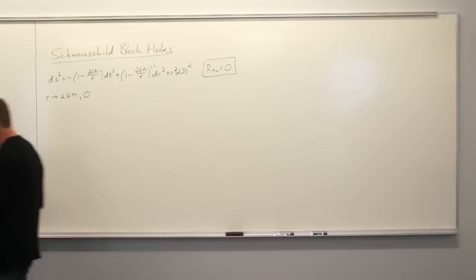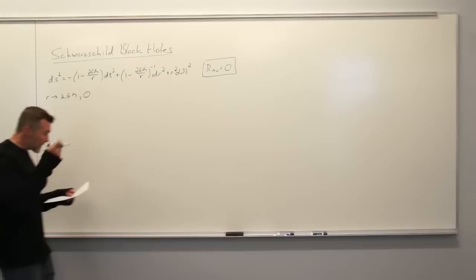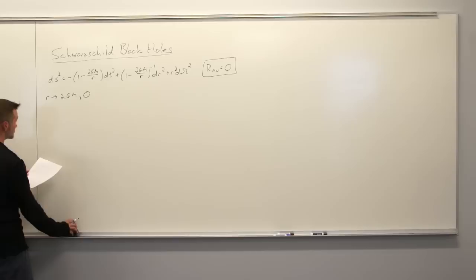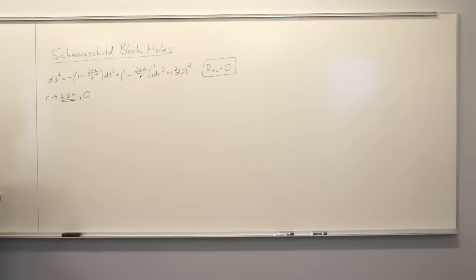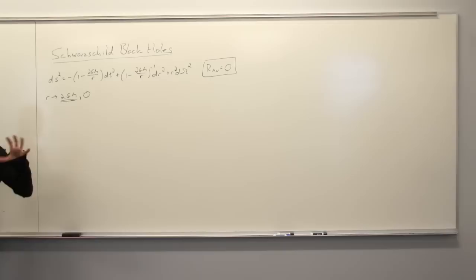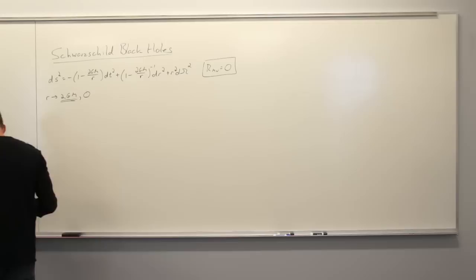We really want to know what a black hole is, so that's what we're going to spend today and next time talking about. r equals zero is a bad place to go — an entire star is sitting at r equals zero — but r equals 2GM, let's see how bad it actually is and figure out what's going on there.